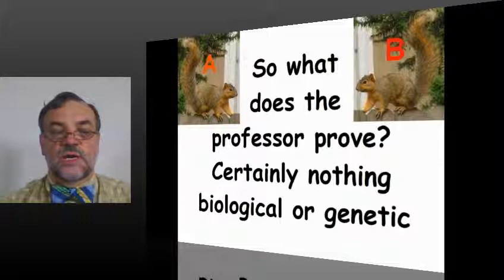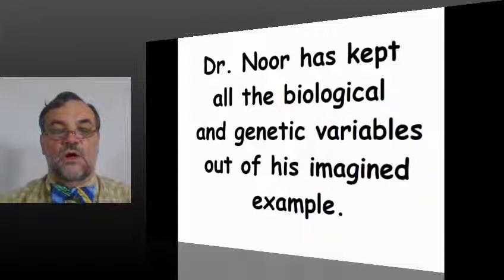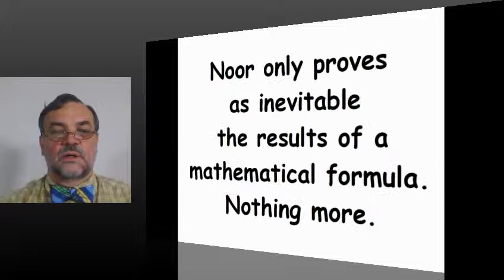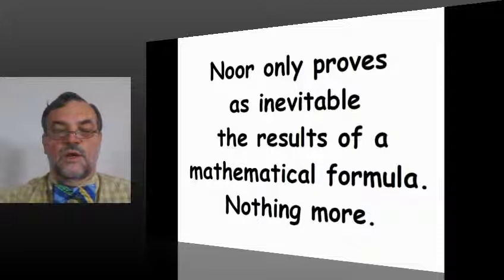So what does the professor prove? Certainly nothing biological or genetic. Dr. Noor has kept all the biological and genetic variables out of his imagined example. Dr. Noor presents the biological and genetic variables as givens. Dr. Noor only proves as inevitable the results of a mathematical formula. Nothing more.